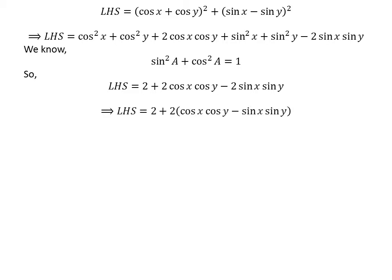If we take the common factor 2 out of the last two terms in the above equation, we get the left-hand side of the equation is equal to 2 plus 2 times the quantity cosine of x times cosine of y minus sine of x times sine of y.